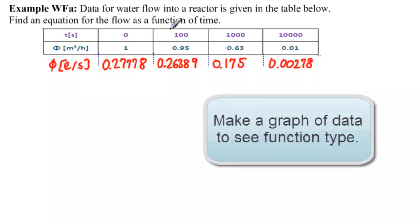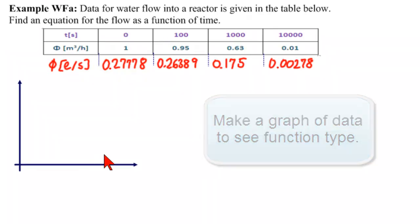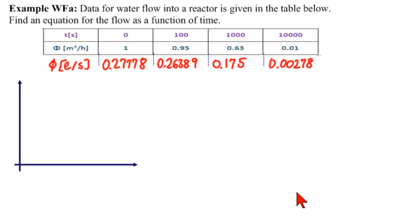In order to make a function, we have to know what kind of function we're looking at. So let's pull up our Cartesian graph and put in these numbers. So t goes from 0 to 10,000.